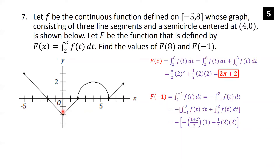The trapezoid from -1 to 0 has bases of length 1 and 2, so its area is (1+2)/2 times height 1. It's below the x-axis so we use a minus sign. The triangle from 0 to 2 has area one-half times 2 times 2, also below the x-axis. With the outer minus sign from flipping limits, F(-1) equals negative of (negative 3/2 minus 2), which gives positive 7/2.